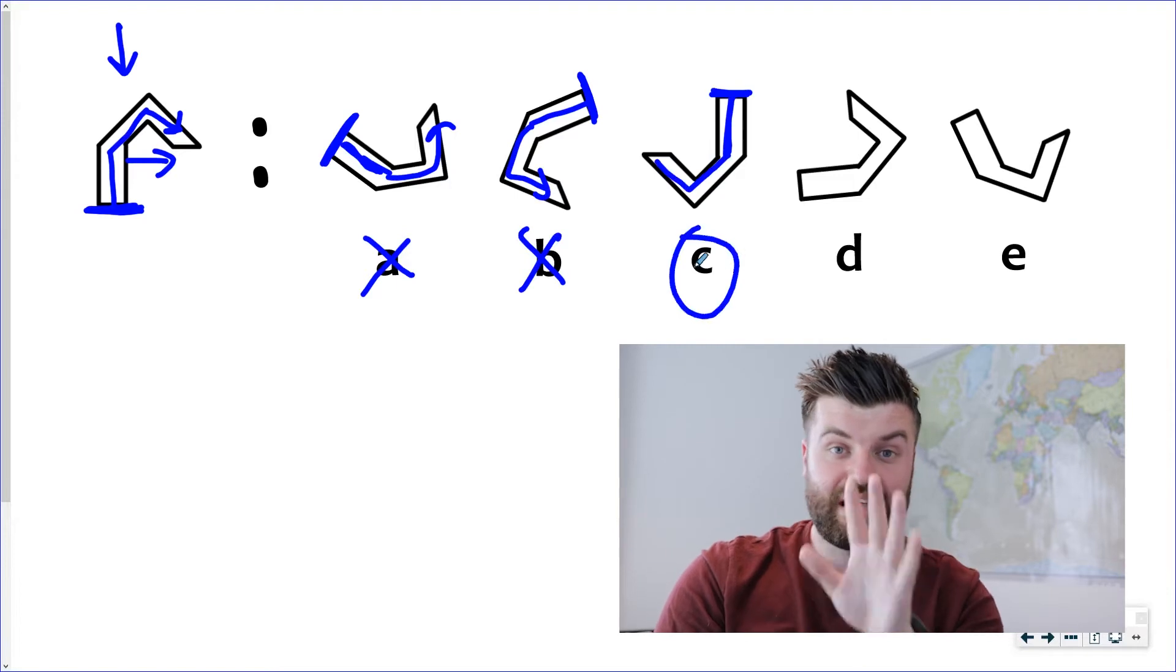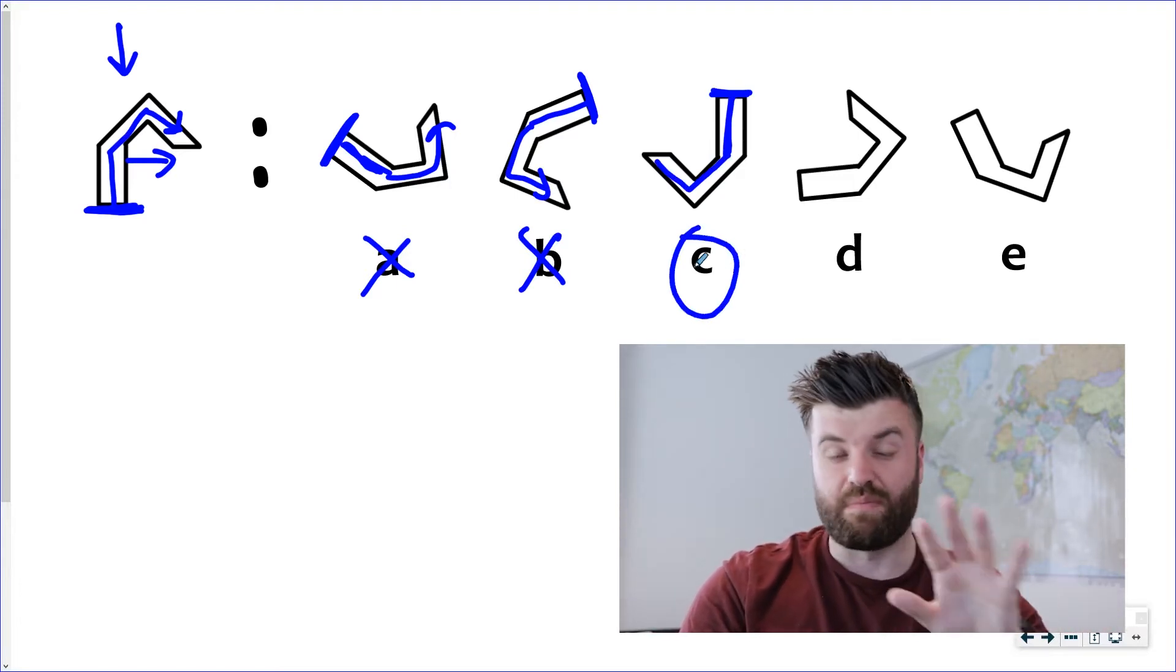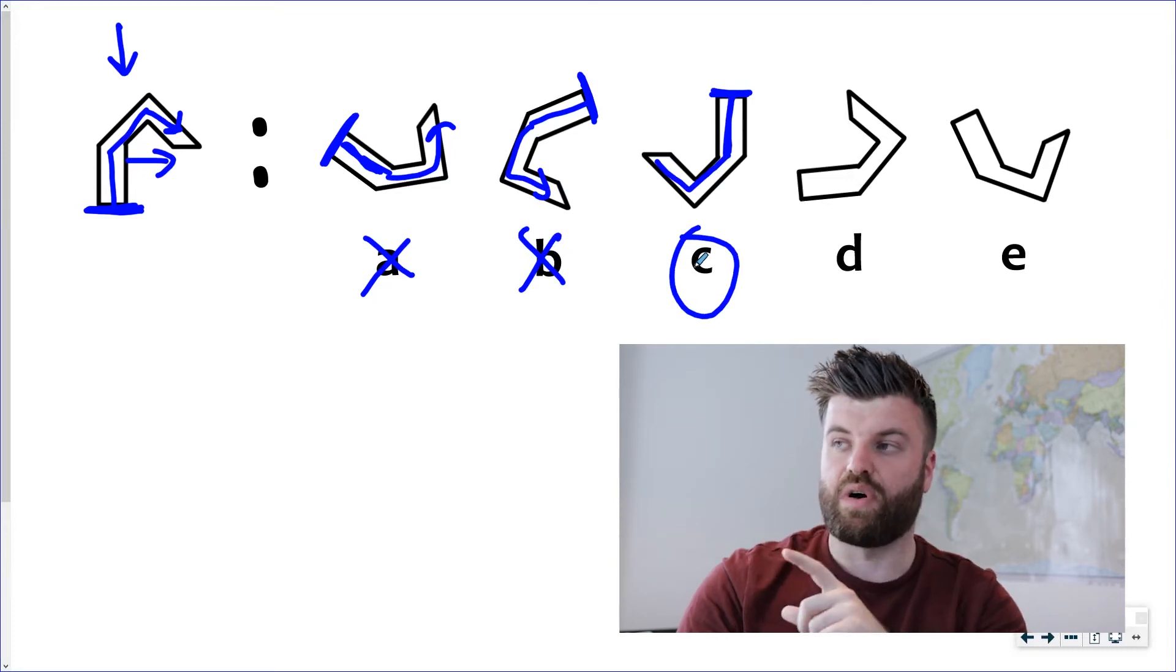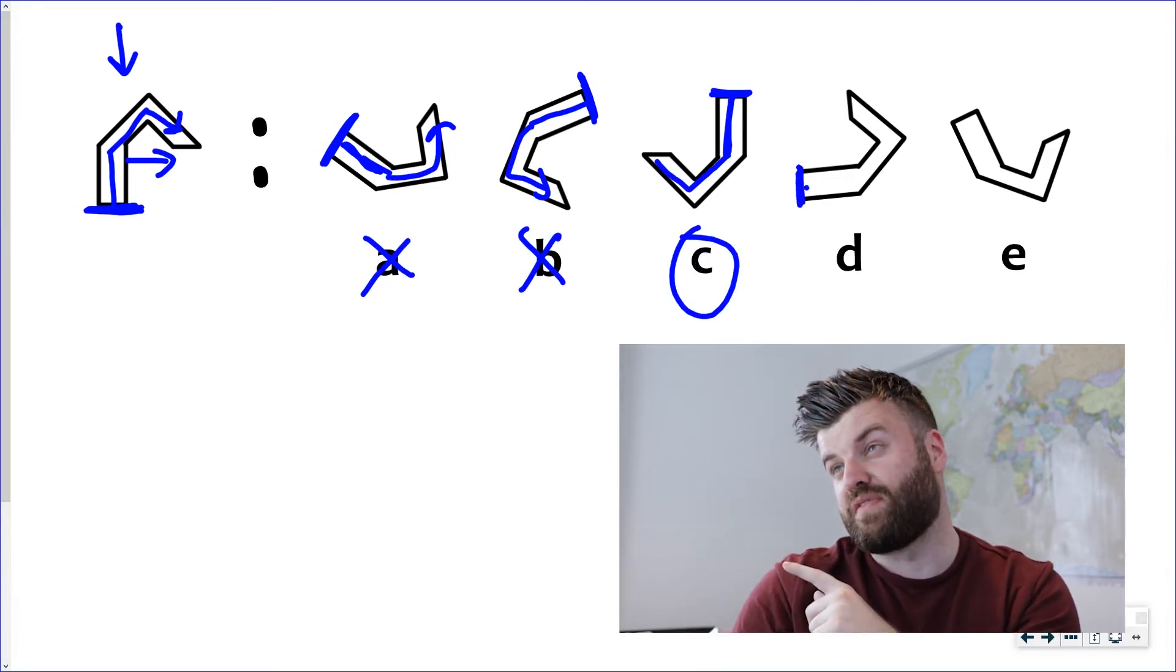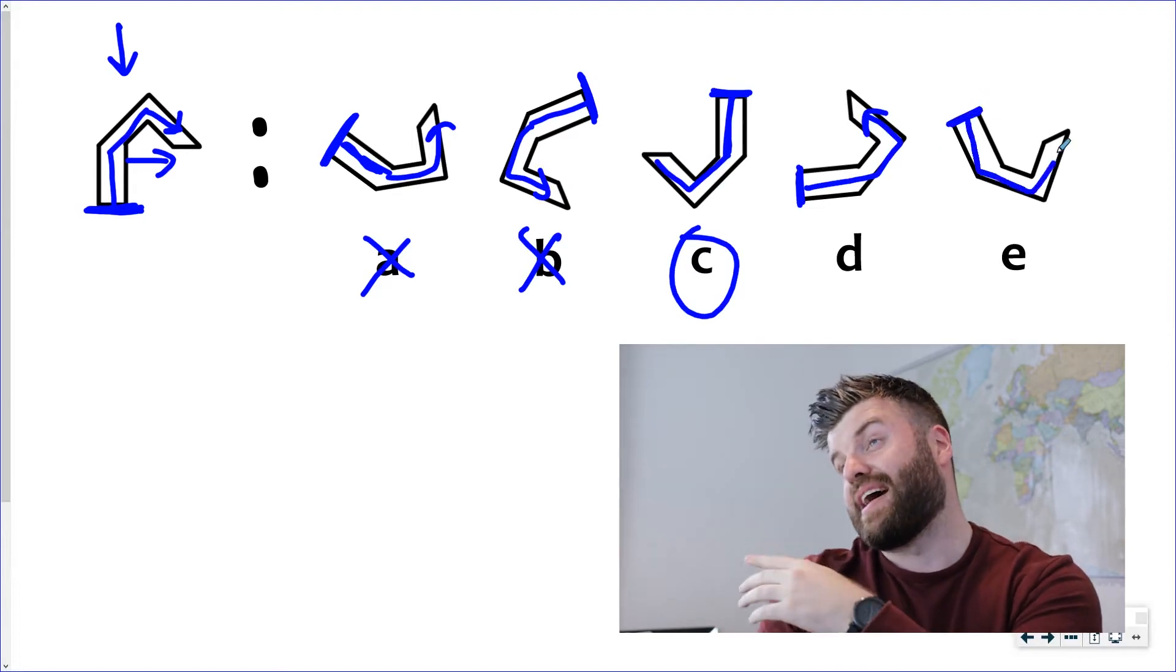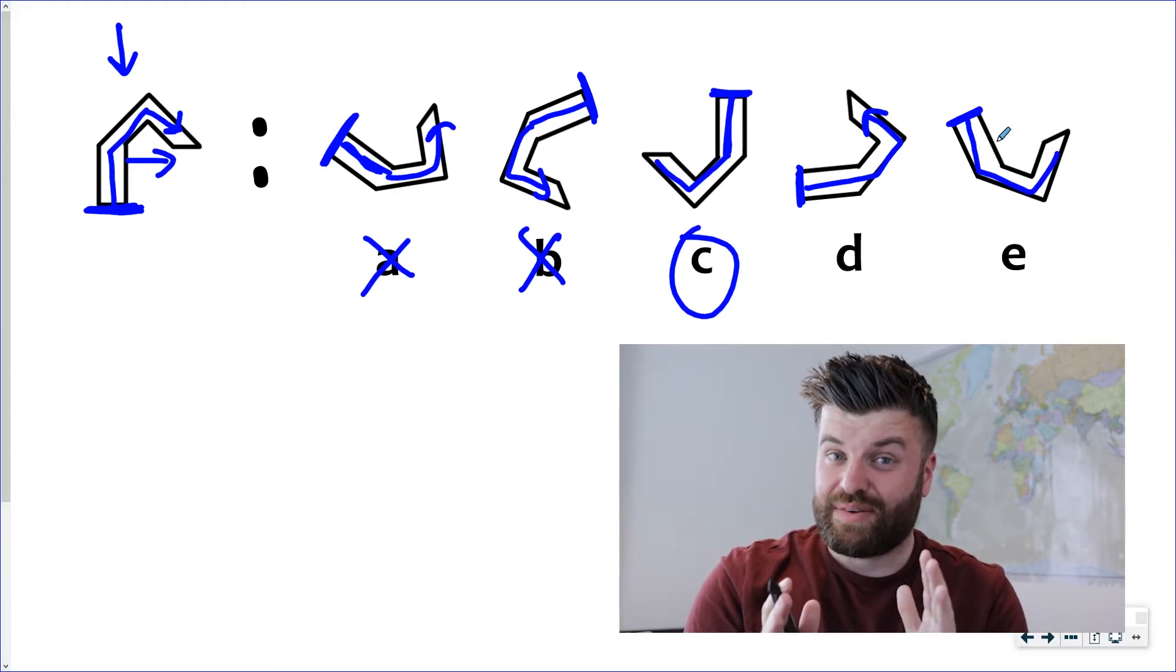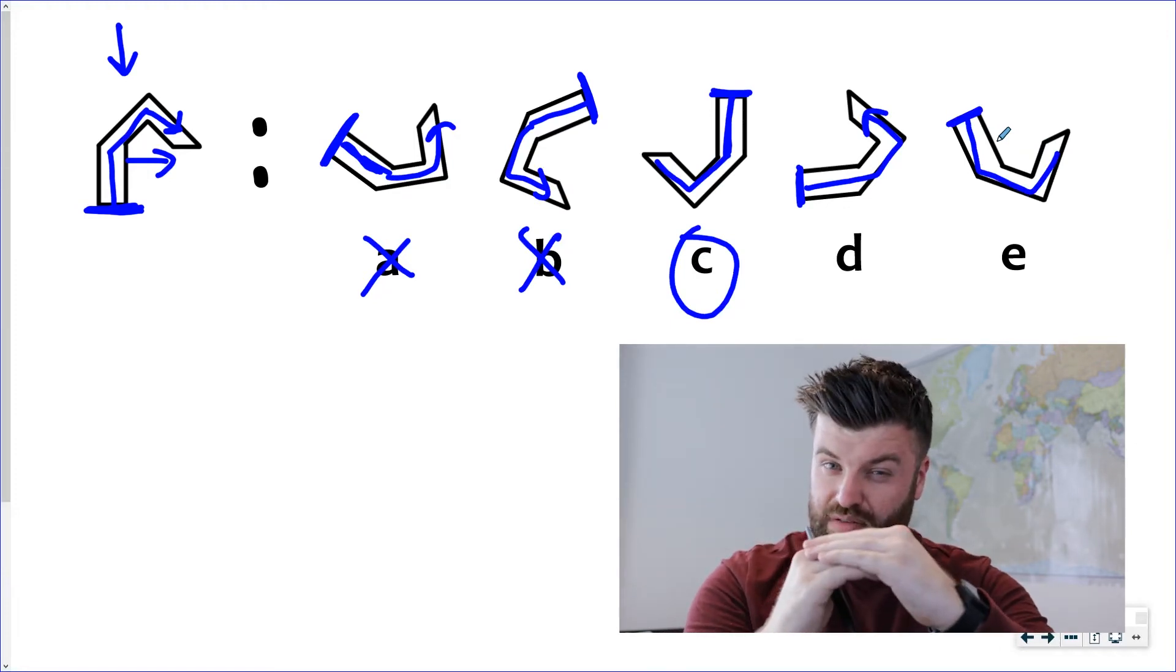Now in the paper you can write down C and move on but I'm just going to prove that the other two don't work. Here's D's base and it overhangs to the left. Doesn't match up and there's E's base and that one also overhangs to the left.